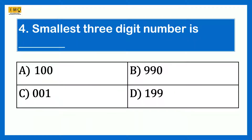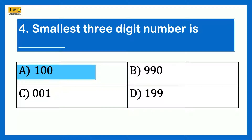Smallest 3-digit number is: Option A 100, Option B 990, Option C 001, Option D 199. The answer is 100. 100 is the smallest 3-digit number.